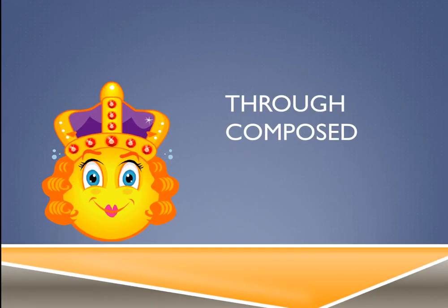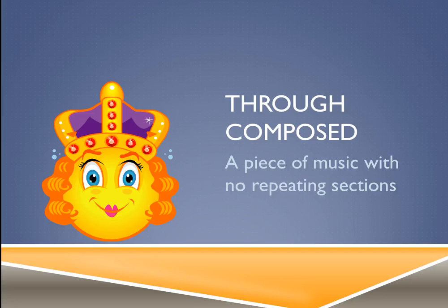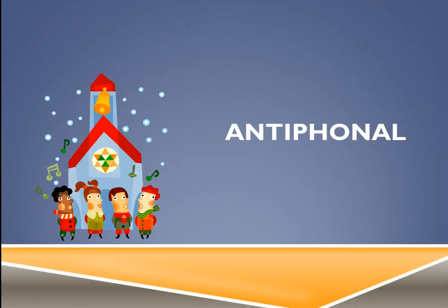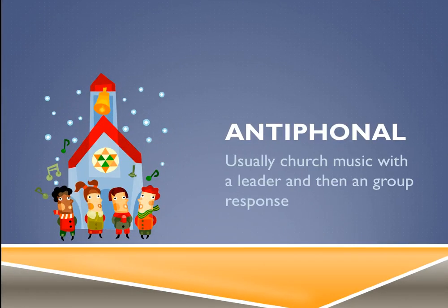Through-composed — there's a little Queen there — is a piece of music with no repeating sections. Think of Bohemian Rhapsody: that song progresses and changes as it goes through and really doesn't have any sections that repeat. That's what through-composed means.